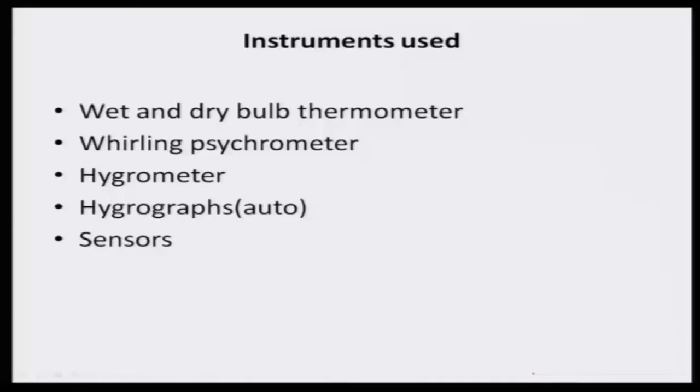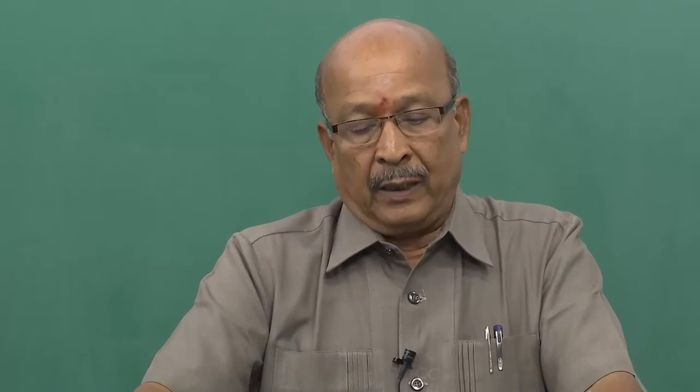The instruments used to measure relative humidity include the wet and dry bulb thermometer, which is operated manually. The bulb is kept moist with cotton threads through water supply — a sensitive instrument. The difference between the normal dry bulb and wet bulb thermometer gives the relative humidity. Another instrument is the whirling hygrometer — if you rotate it, it records air-related humidity and you can get an instant reading.